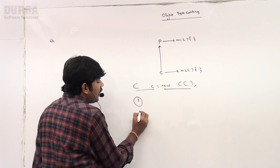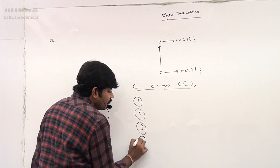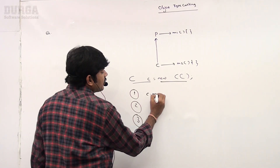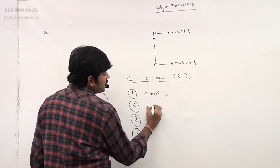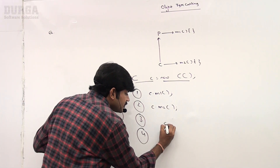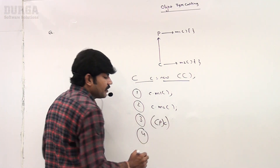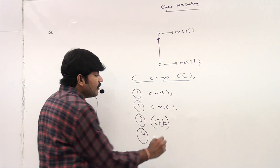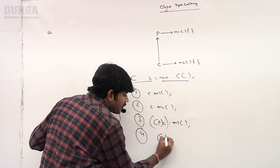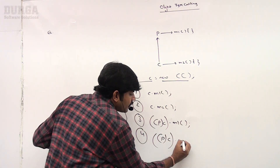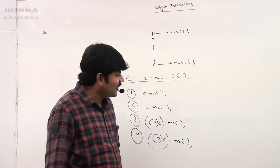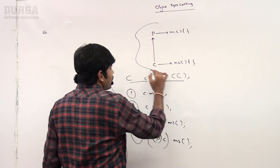Which of the following method calls are valid? We have: C.M1, C.M2, then C typecast to parent — (P)C.M1, and (P)C.M2. We are trying to typecast C to the parent type. Can you tell which are valid and which are invalid according to this scenario?